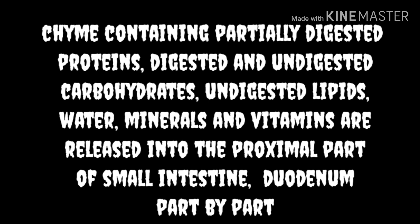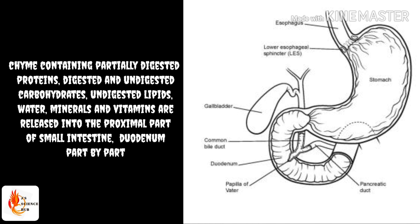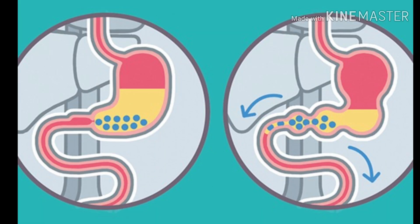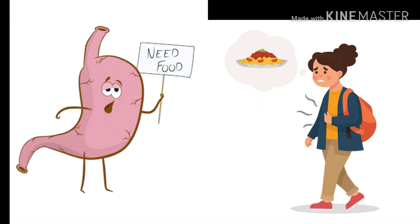Chyme — containing partially digested proteins, digested and undigested carbohydrates, undigested lipids, water, minerals, and vitamins — is released into the proximal part of the small intestine called the duodenum. When the stomach is empty it continues to contract; if it is empty for a long period the contraction rate is high, causing a sensation of hunger — a signal indicating the need for food.